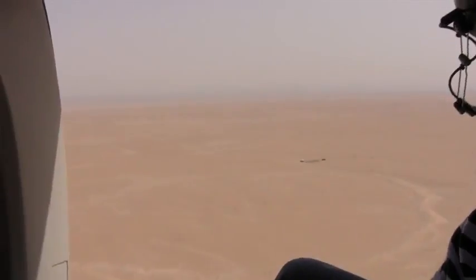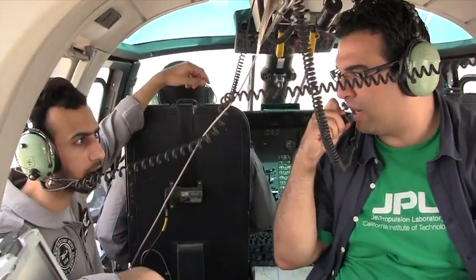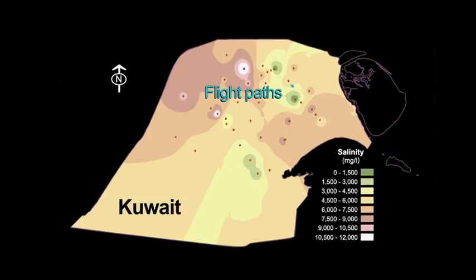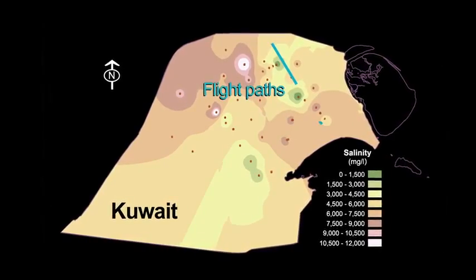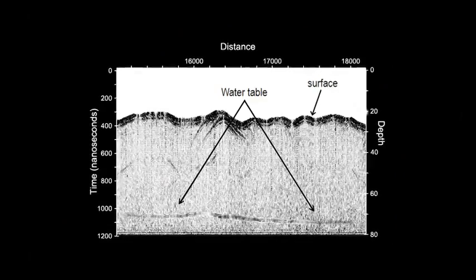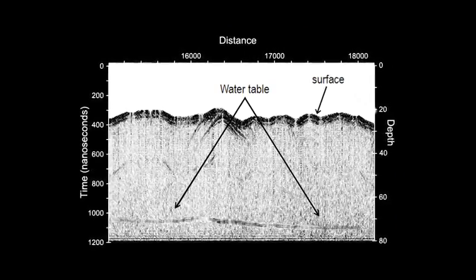To our big surprise, we were able to find these aquifers. We were able to map the depth of the water table — the depth at which water sits in the subsurface. We were able to see recharge locations and discharge locations. We were able to prove that yes, we can use that radar technology from Mars to map water on earth on a large scale.